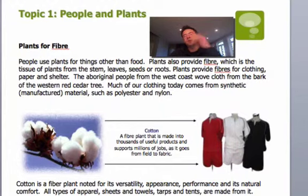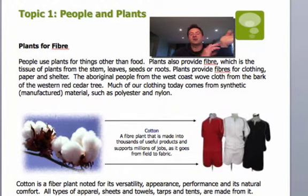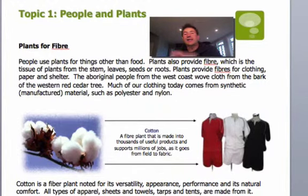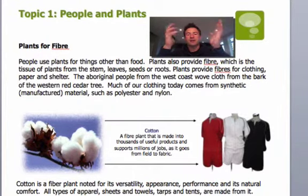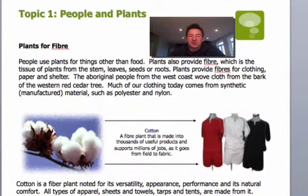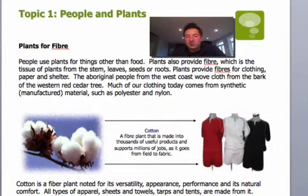An example is Aboriginal people from the west coast. They used to weave cloth from the bark of the western red cedar tree. They'd take those tissues from the bark and weave them together to make clothing, which is very useful.